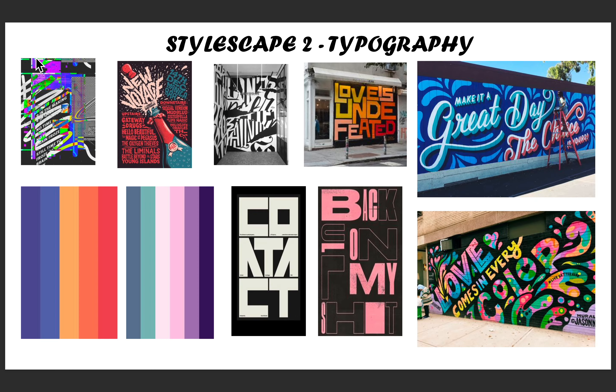My second stylescape was typography inspired. I looked into large font with a variety of bright colors so that it would stand out wherever I would put it. Some of the colors I used were purples, because they are representative of domestic violence, as well as pinks, blue, coral, and yellow-type colors.